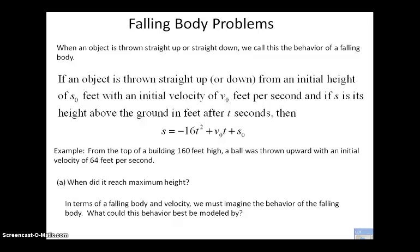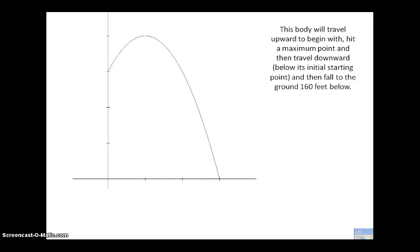Let's say they ask us when did it reach the maximum height. In terms of a falling body and velocity, we have to imagine the behavior of the falling body. We recognize that they are all parabolas that open down. When we throw it up initially it's going to travel upward and then it'll hit its maximum point where it can fight gravity and then it's going to turn and start traveling back down to the surface of the earth.